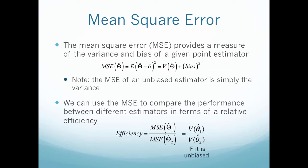Note that if it is unbiased, then my efficiency would just be equal to the variance of one divided by the variance of the other because we don't have to incorporate bias. This is a nice shortcut if you have an unbiased estimator.